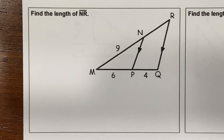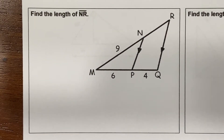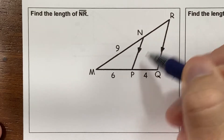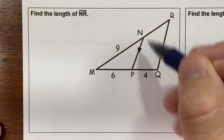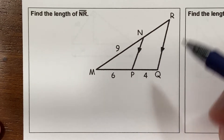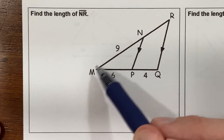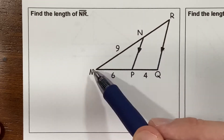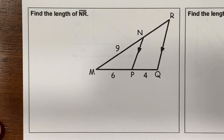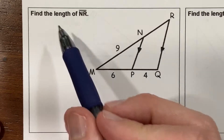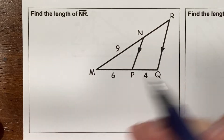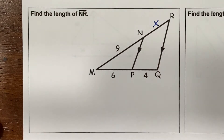We're going to look at some triangles within triangles. I have some parallel lines right here, and since I have parallel lines I've got some similar triangles — a large triangle and a small triangle. These are fairly easy problems, a very specific style. We're finding the length of NR, so I'm going to put an x right there.